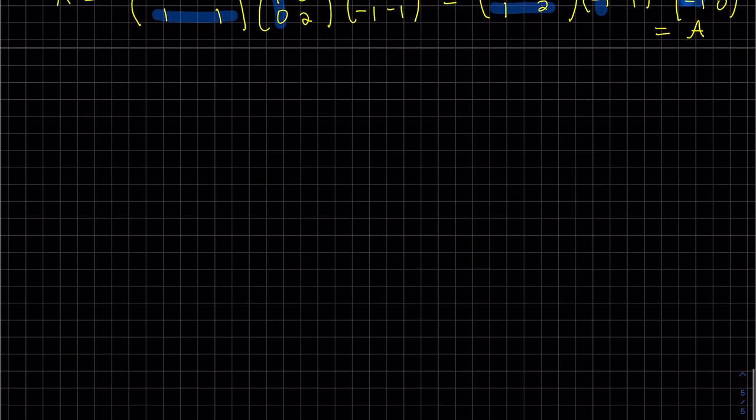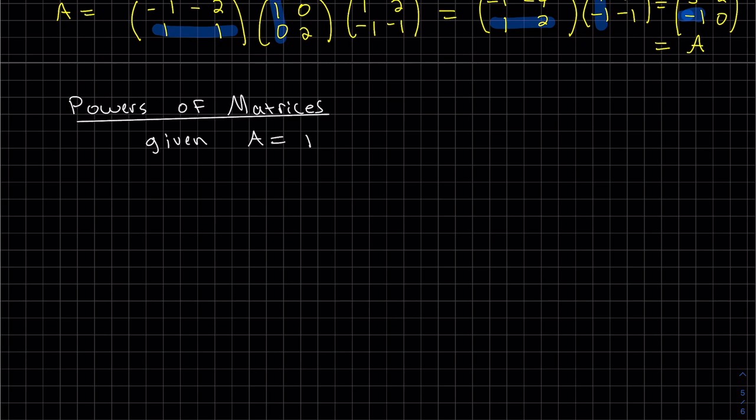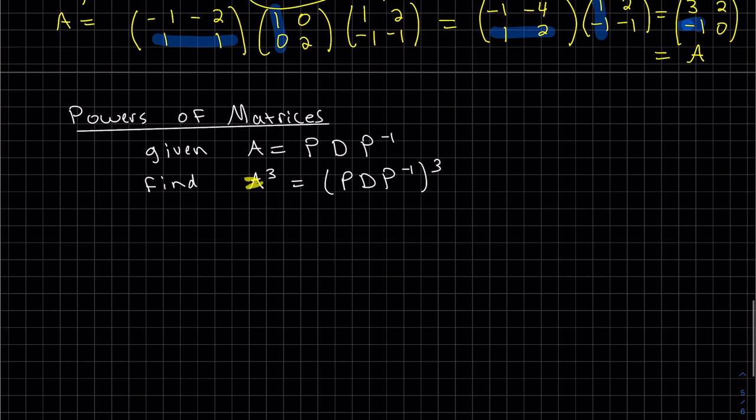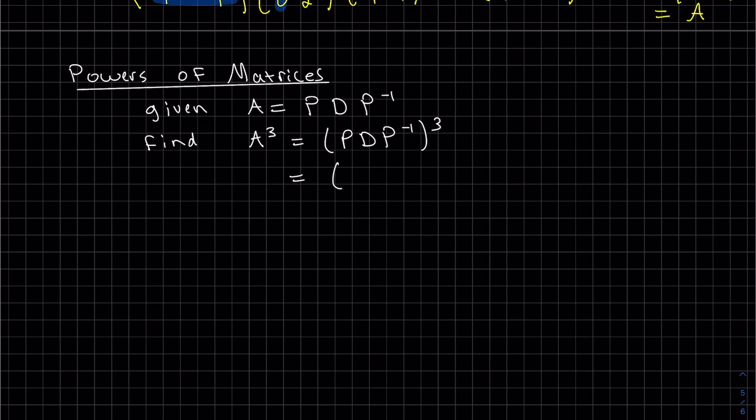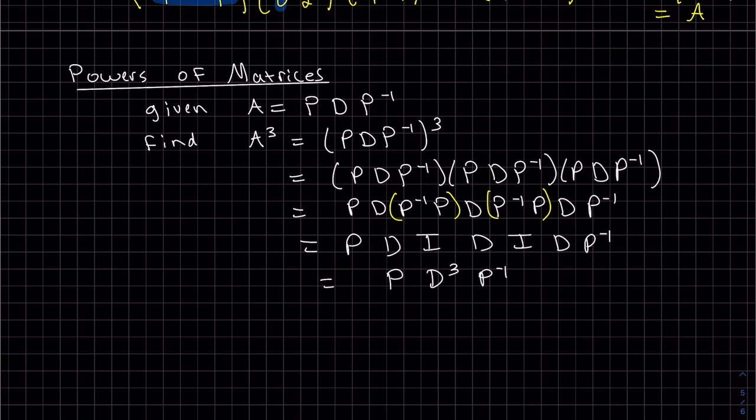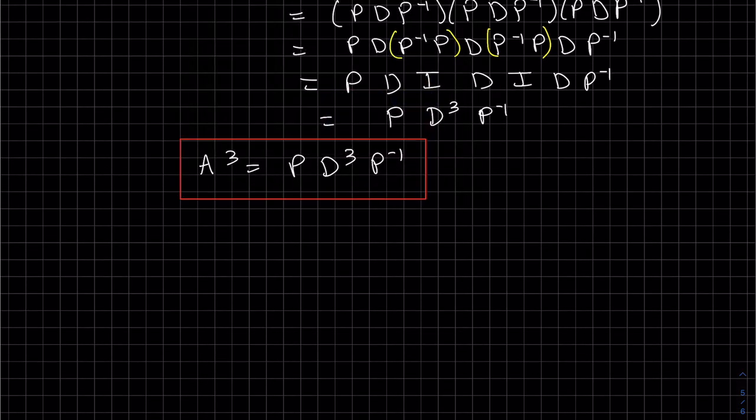Here's a cool result that we can use for diagonal matrices. We're just taking the third power of each side. We'll write this out three times. We can regroup, I just dropped the parentheses, I'm going to regroup these and you can see this is going to be I, the D's there, this is I. So this is our result, A to the third is P D to the third P inverse.